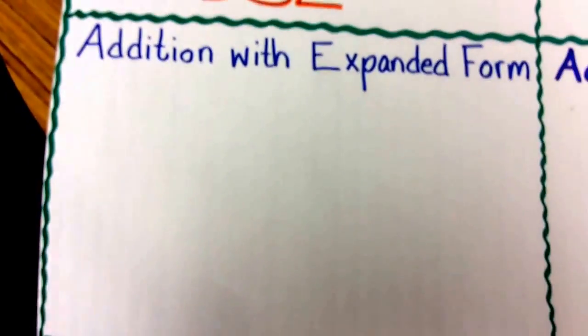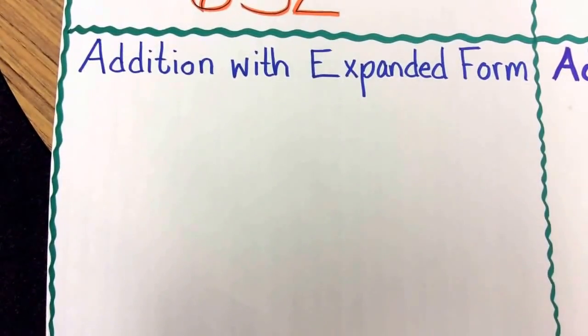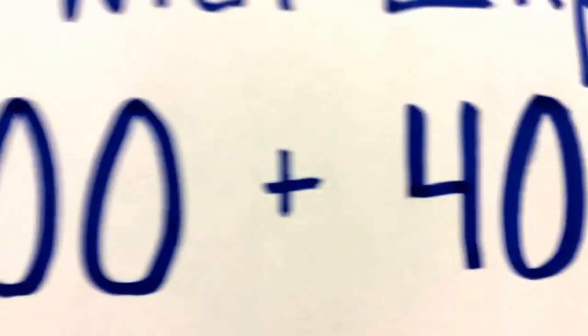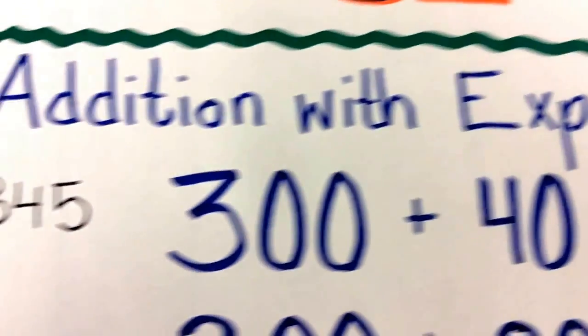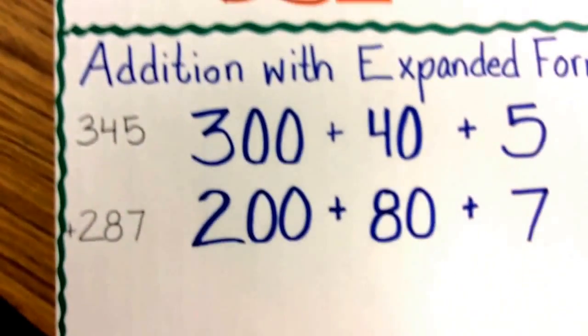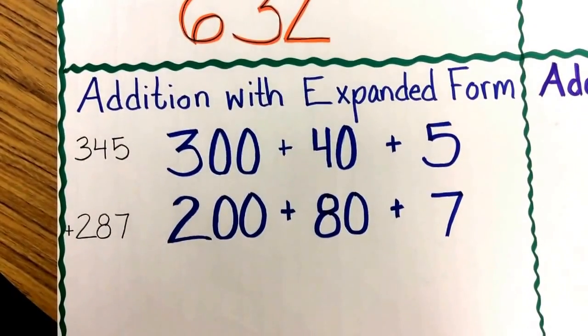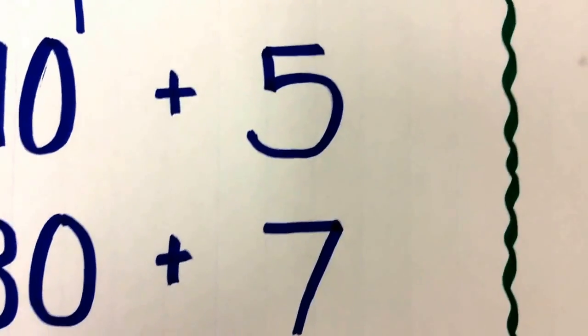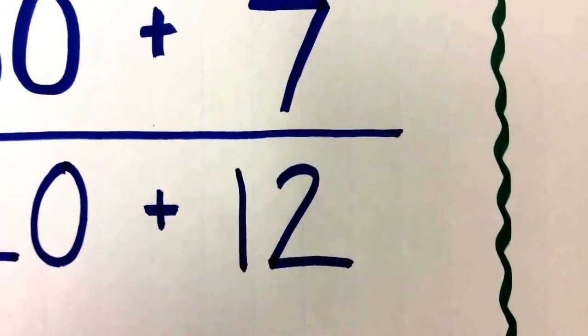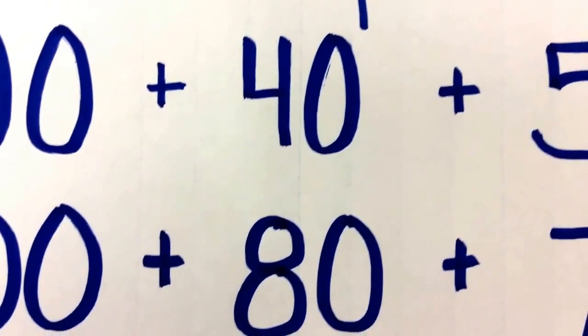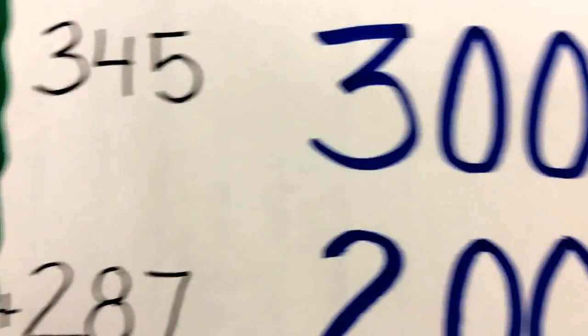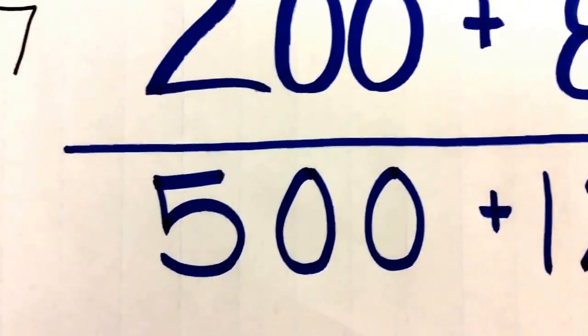There's also adding with expanded form. When I expand the number 345, I am left with 300 plus 40 plus 5. And when I expand the number 287, I have 200 plus 80 plus 7. This is what addition with expanded form looks like. I can start in my ones place and add 5 plus 7 to get 12. Moving to the tens place, I add 40 plus 80 to get 120. And finally, when I add 300 plus 200, I have 500.